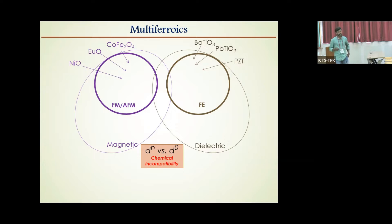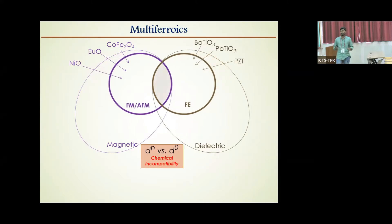Similarly to observe ferroelectricity, we need empty or fully filled d-orbitals. So due to this chemical incompatibility, combining both these properties in single material is difficult. But there are materials in which both properties coexist and are coupled to each other, which are known as multiferroics.